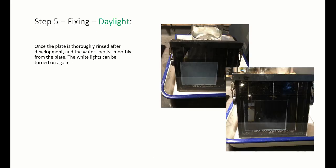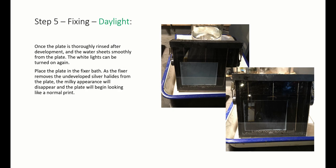Step 5: Fixing. Once the plate is thoroughly rinsed after development and the water sheets smoothly from the plate, the white lights can be turned on again. Place the plate in a fixer bath. As the fixer removes the undeveloped silver halides from the plate, the milky appearance will disappear and the plate will begin looking like a normal print.